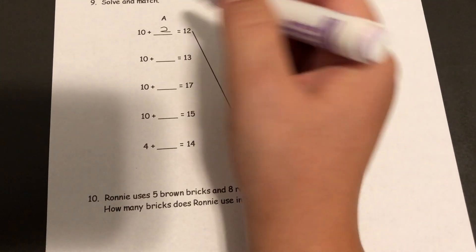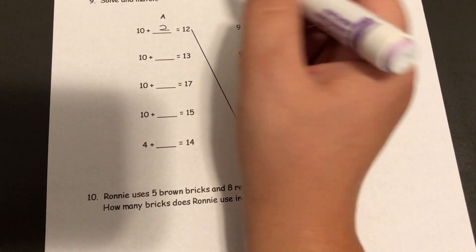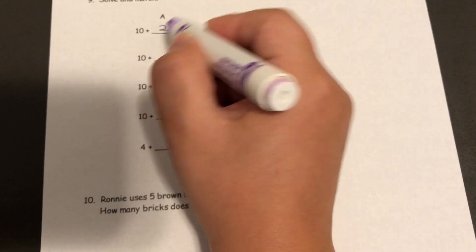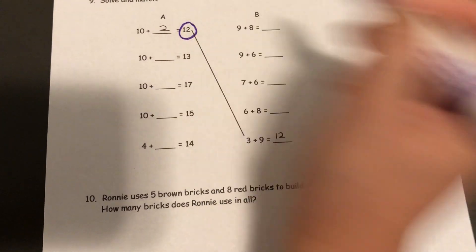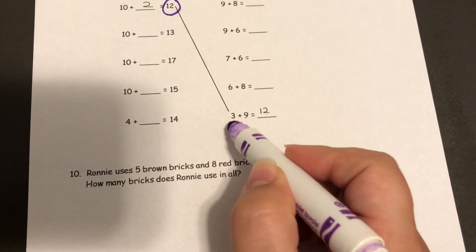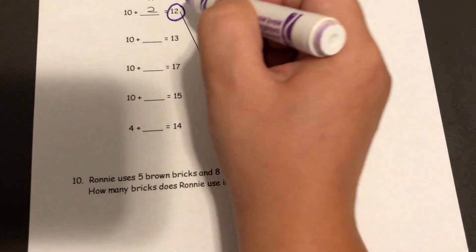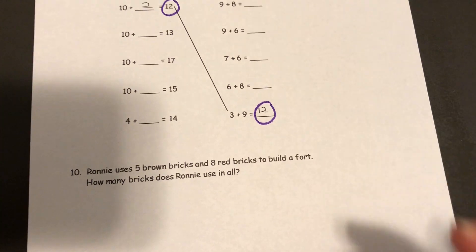And then after you're done filling in the blanks, you'll find which ones have the same answer, or sum. Sum is the answer when we're talking addition. So the sum for 10 plus 2 was 12, and the sum of 3 plus 9 is 12, so they drew a line to connect them.